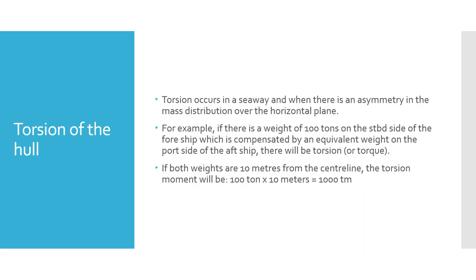Torsion actually occurs in a seaway when there is an asymmetry in the mass distribution over the horizontal plane of the ship. For example, if there is a weight of 100 tons on the starboard side of the forward part of the ship and an equivalent weight of 100 tons on the port side but on the aft part, the ship experiences a torsional torque. If both weights are 10 meters from the centerline, the torsional moment will be 100 tons × 10 meters = 1000 ton-meters.